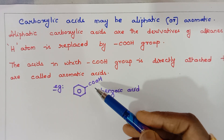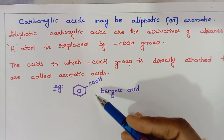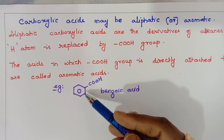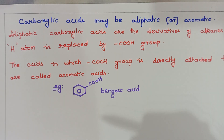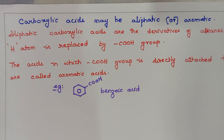So it has one COOH group, making it monocarboxylic and aromatic. Hope you understood the classification of carboxylic acids, what a carboxylic acid is, and how the name carboxylic is derived. Students, you can write all these points in your notebook so that it will be helpful before going into the details of carboxylic acids.